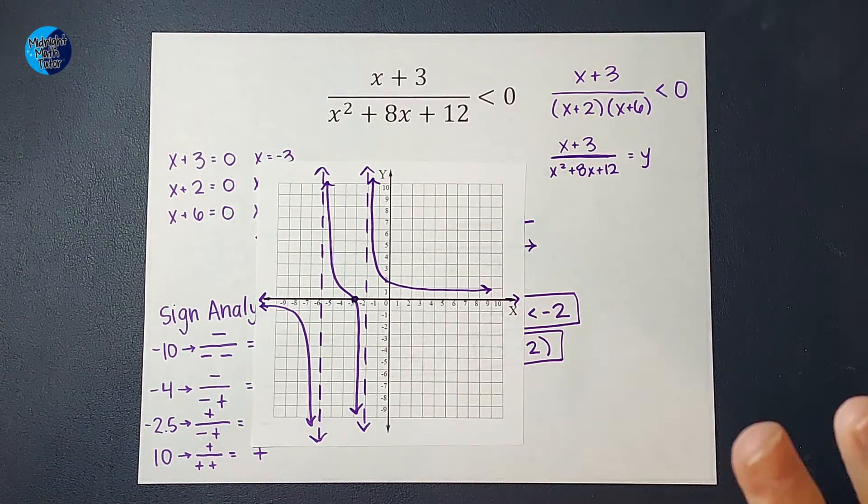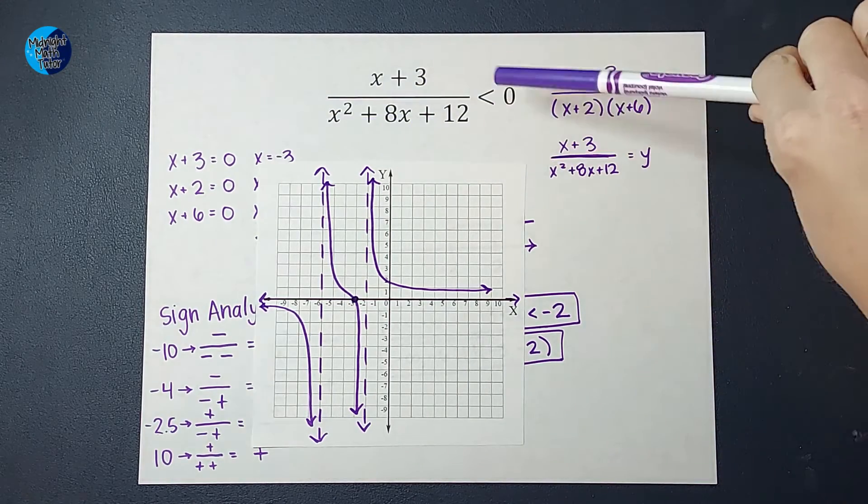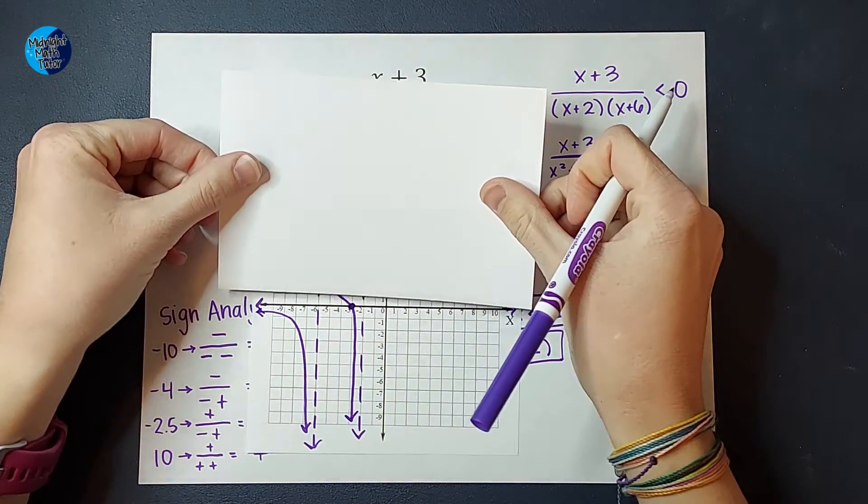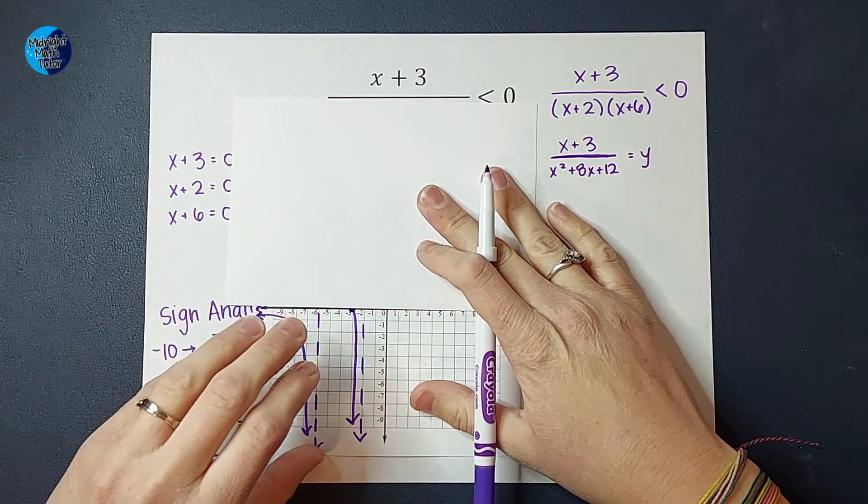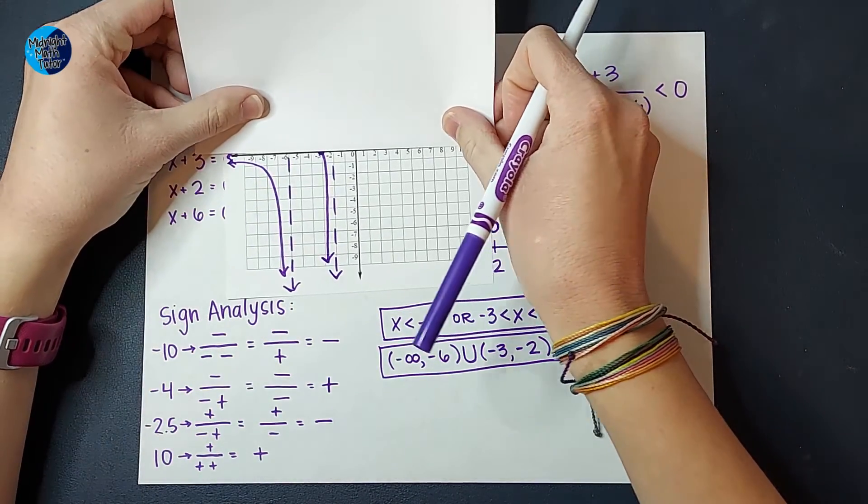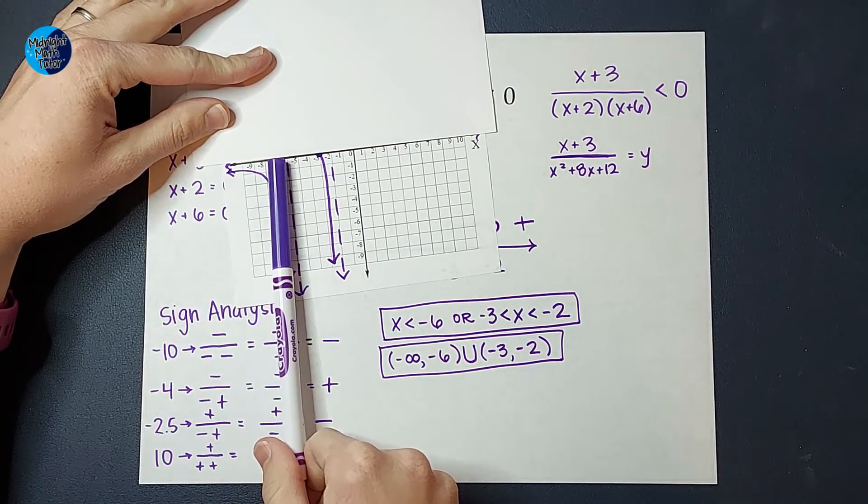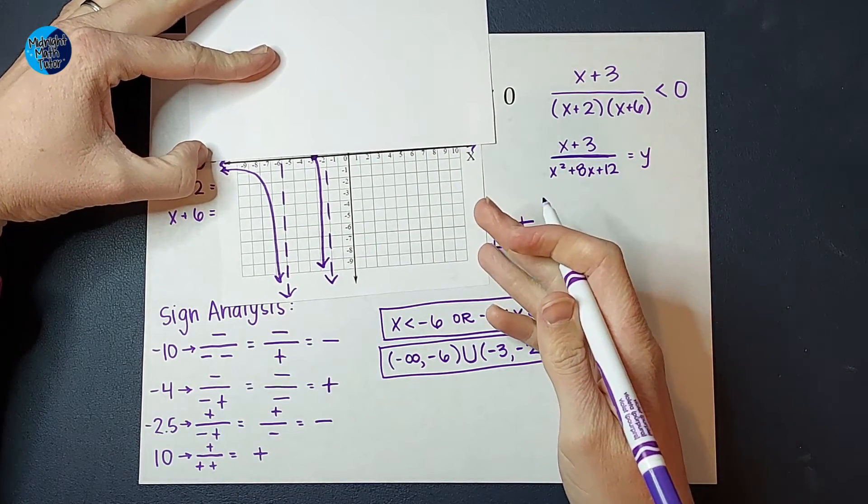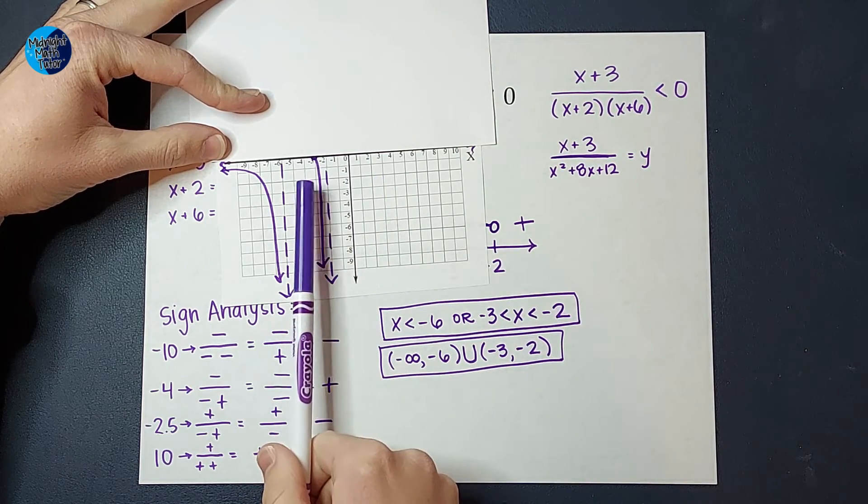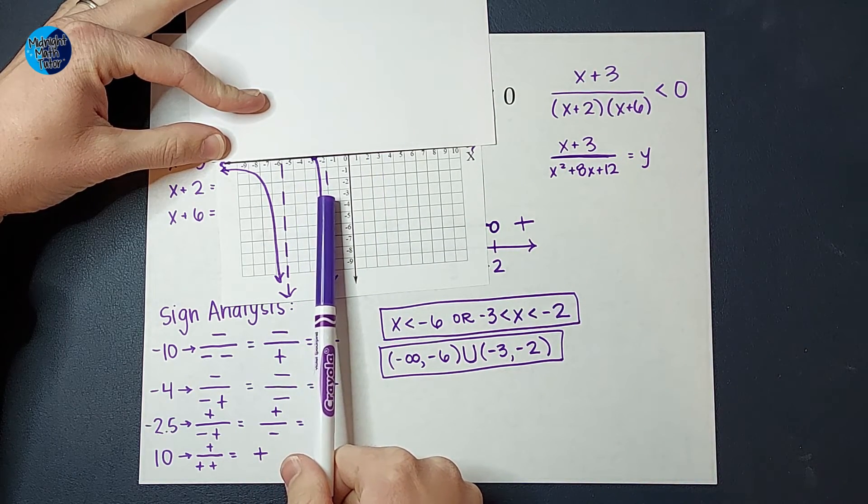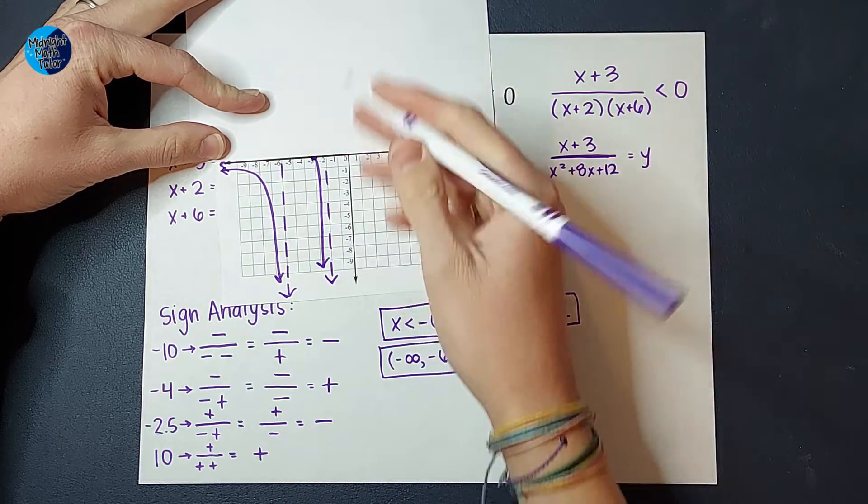From here, guys, this is where it's cool. Okay. Where is this? This is what we just graphed, right? Where is it less than 0? Let's look. Well, it is less than 0. Let me scoot it over or up. I don't know. Okay. Right here. Where is it less than 0? It is less than 0 from negative infinity all the way to negative 6. But it can't actually be negative 6. That's where the asymptote is. And then it's also less than 0 from negative 3 to negative 2. It can't actually be negative 3 because that's right on the 0. And it can't be negative 2 because that's the asymptote.